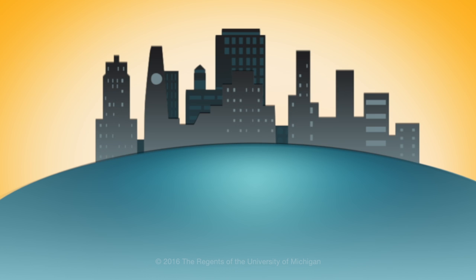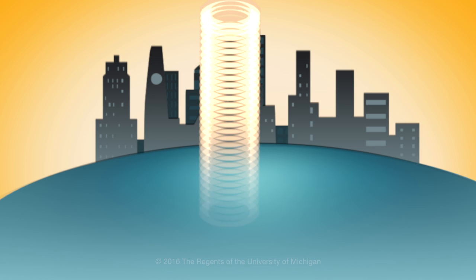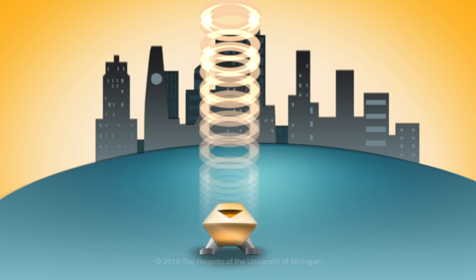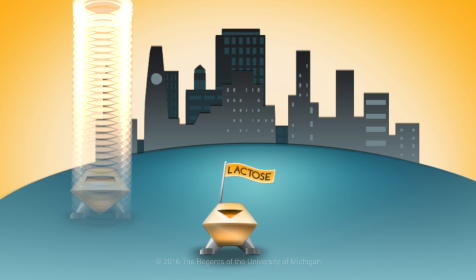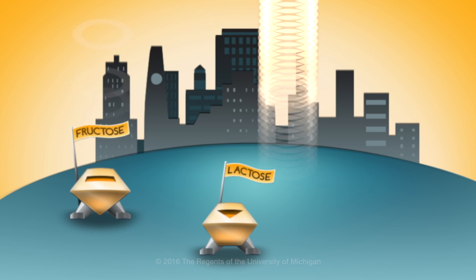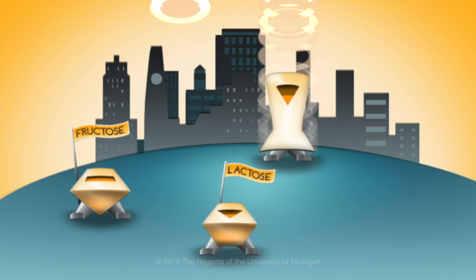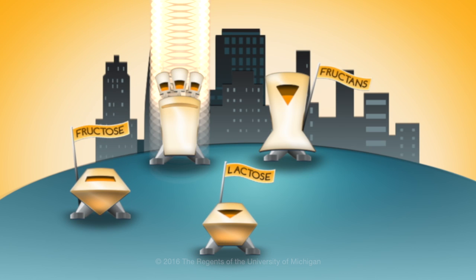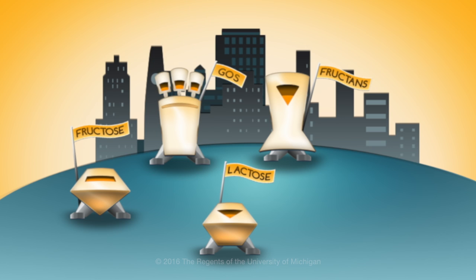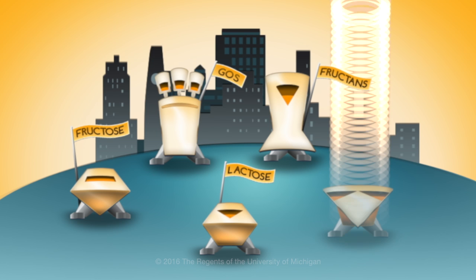Here are the five main types of FODMAPs: lactose, fructose, fructans, GOS (galacto-oligosaccharides), and polyols.